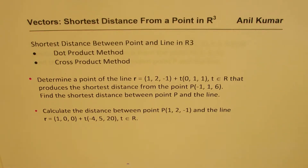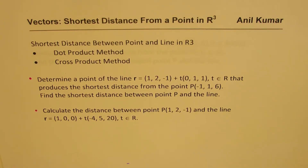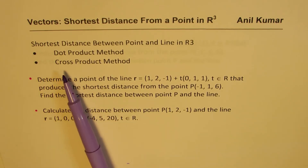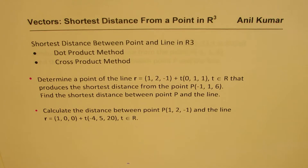I'm Ahil Kumar. Welcome to my series on vectors. We'll explore how to find the shortest distance from a point in R3 to a line. There are two different methods which can be followed: one is using the dot product and the other one is using the cross product. We'll also discuss when to use which method.